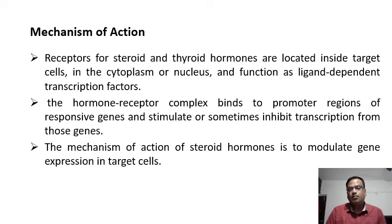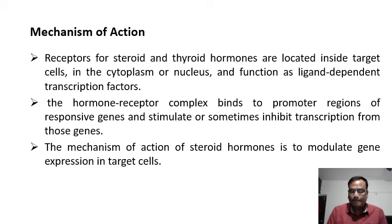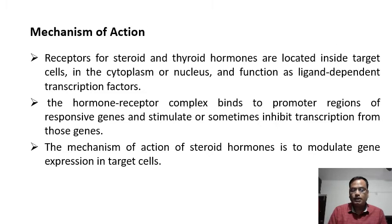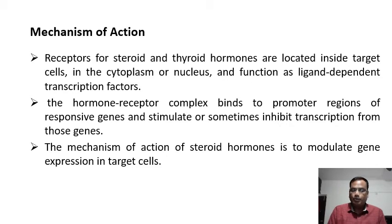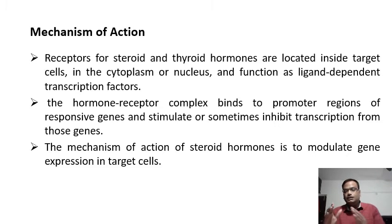Once the steroid hormone or thyroid hormone enters into the cell, it binds to the receptor, which is a transcription factor. This combination of receptor and hormone goes and binds to the promoter region of the DNA — the genetic material of the cell. It may be stimulatory or inhibitory: when it binds to a particular gene, either that gene is activated for expression, or if it is already expressing, that gene will be suppressed.